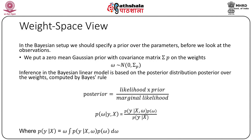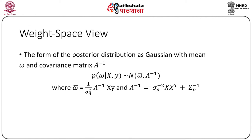In the Bayesian setup we specify a prior over the parameters before looking at the observations. We put a zero-mean Gaussian prior with covariance matrix Σ_p on the weights: ω ~ Normal(0, Σ_p). Inference in the Bayesian linear model is based on the posterior distribution, which follows from Bayes' rule as posterior ∝ likelihood × prior. The form of the posterior is Gaussian with mean ω̄ and covariance matrix A^{-1}: p(ω | X, y) = Normal(ω̄, A^{-1}).